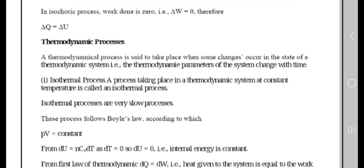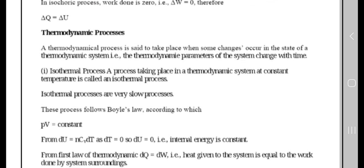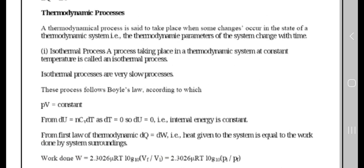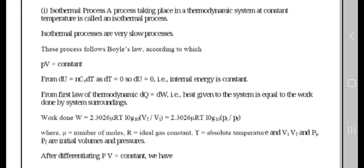Next, thermodynamic processes. A thermodynamic process is said to take place when some changes occur in the state of a thermodynamic system. The first is isothermal process. A process taking place in a thermodynamic system at constant temperature is called an isothermal process, and it is a very slow process.